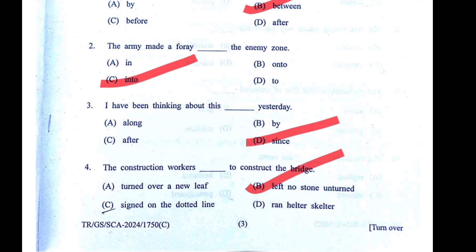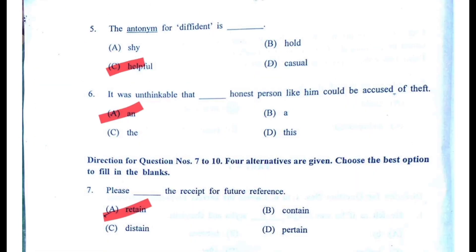Question four: 'The construction worker — to construct the bridge.' Options are A: turned over a new leaf, B: left no stone unturned, C: signed on the dotted line, D: helter-skelter. The answer is B — the construction worker left no stone unturned to construct the bridge.